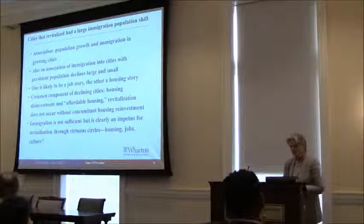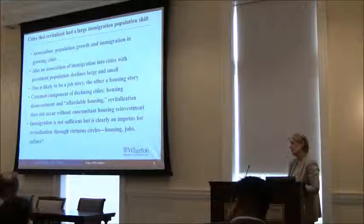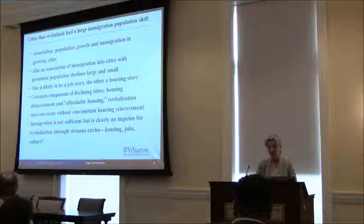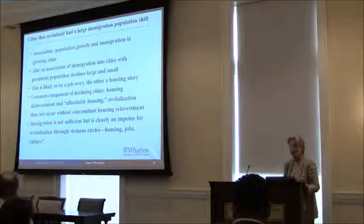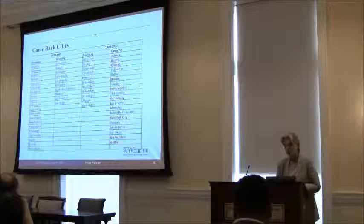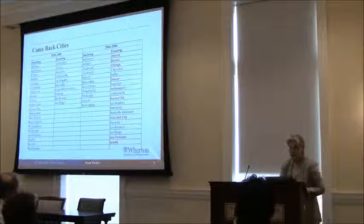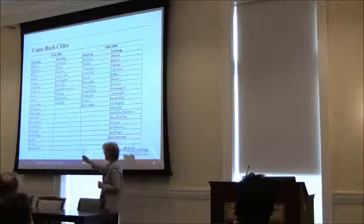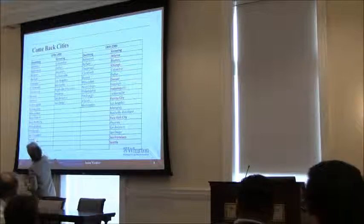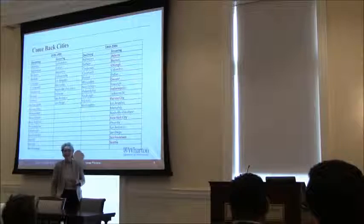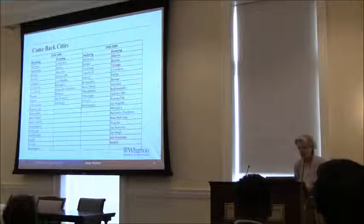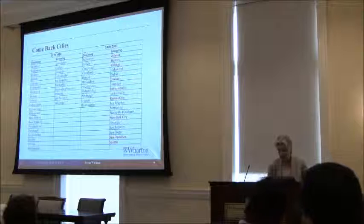Immigration is clearly not sufficient, but an impetus. Revitalization through virtuous circles — virtuous circles of job growth in cities, which can lead to agglomeration economies; virtuous circles of housing and reinvestment that lead to a tax base, and presumably culture as well. Here is the list of the top 30 cities that were in decline, including Washington D.C., Seattle, San Francisco, New York City, Boston, and Atlanta — decades of decline — and then they reversed, showing growth from 1990 to 2000.